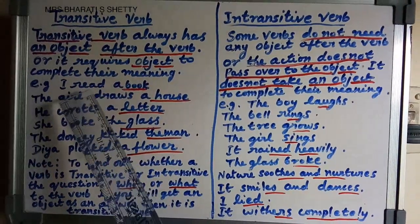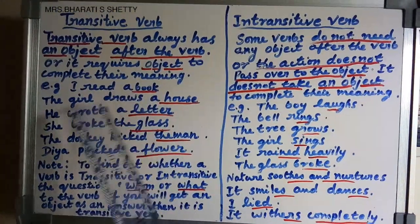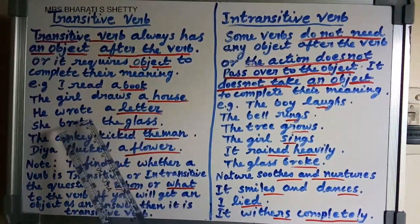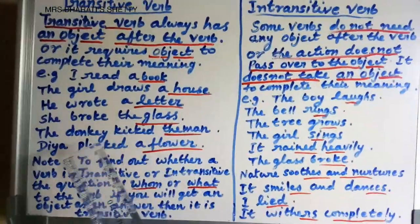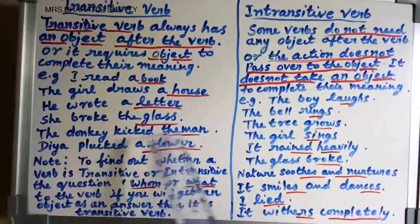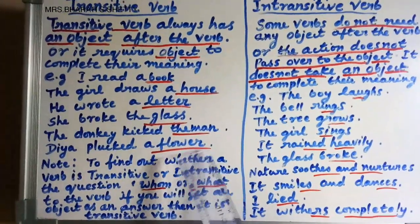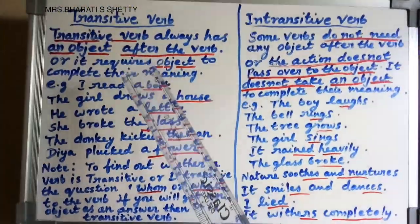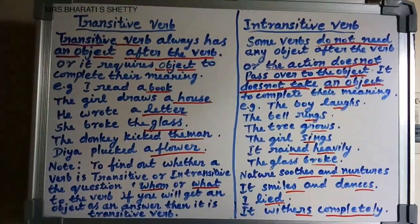See here — after the verb, there is an object. In each sentence: verb, then object. We need an object after the verb, so definitely it is a transitive verb.